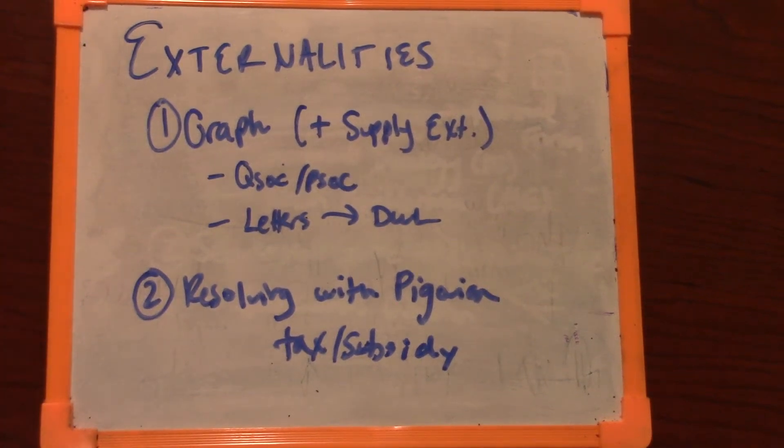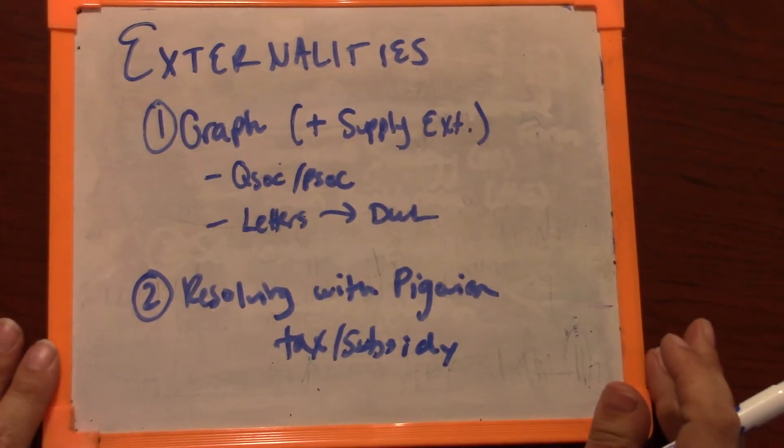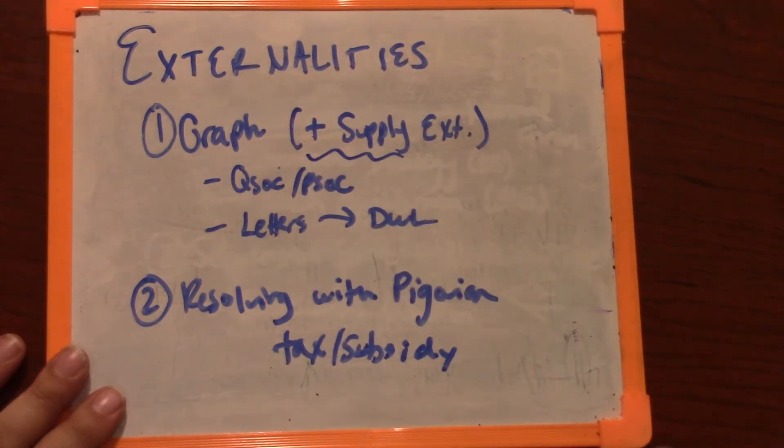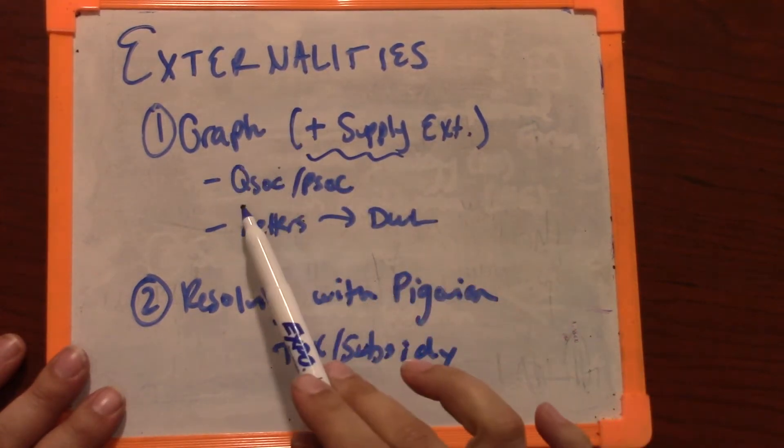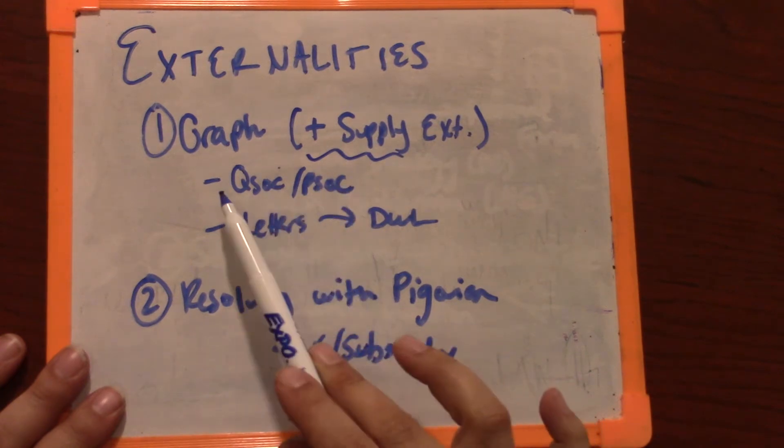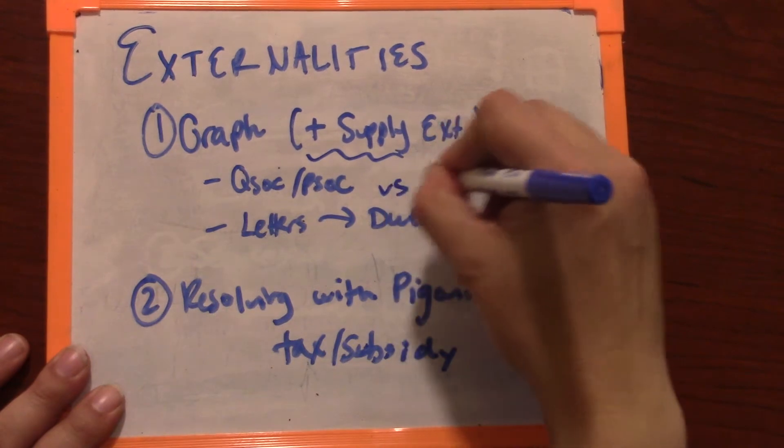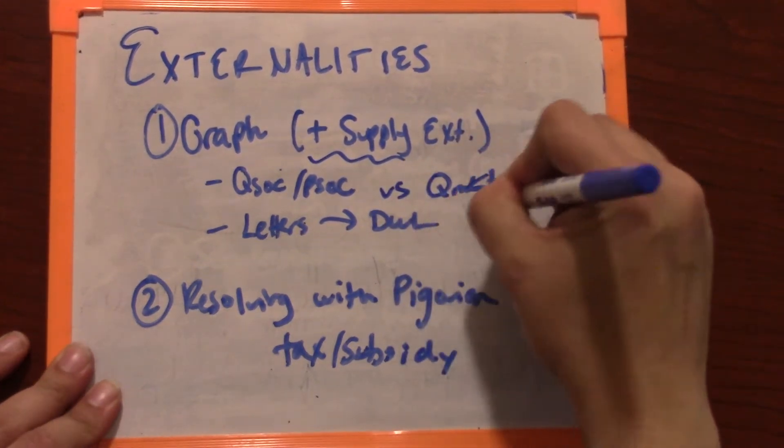Okay, so here's a video on externalities. I'm going to talk you through the same externality that I did in the notes but a little bit slower. So this will be a positive externality on supply. We'll talk about how you graph it, how you show the socially optimal price and quantity versus the quantity given by the market and price given by the market.